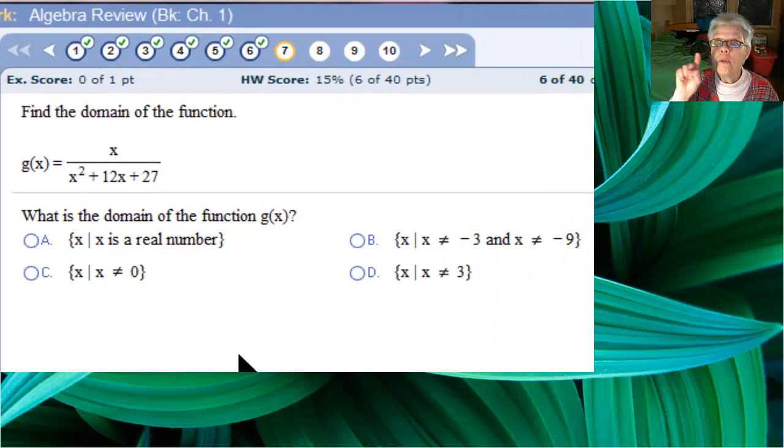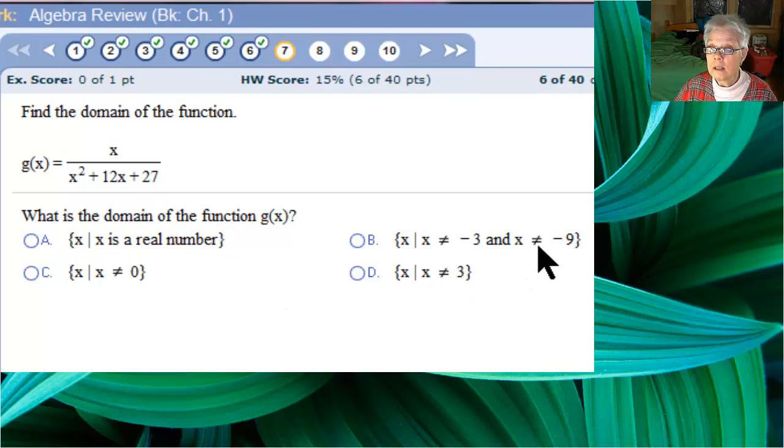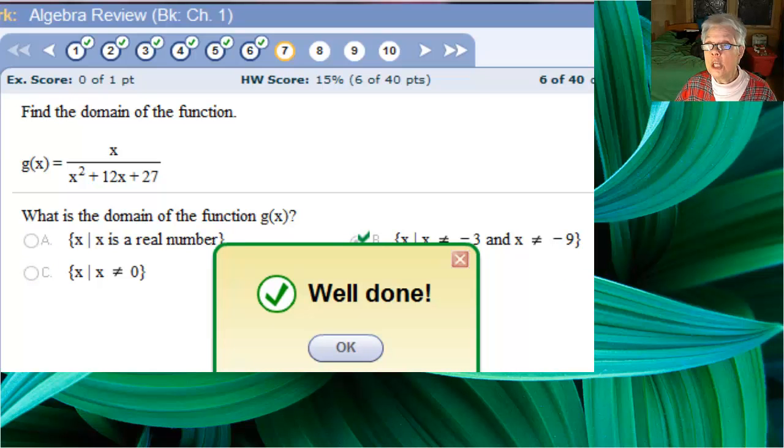Now, those two numbers have to be removed from the domain, and b says that. All x such that x does not equal negative 3 and x does not equal negative 9. b is our answer. Let's check it out. We're right.